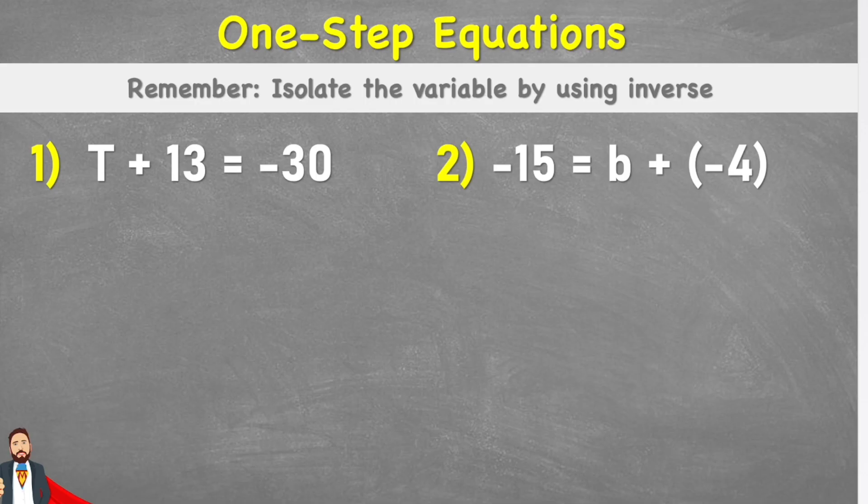Okay, so first let's just look at our equation here and try and identify any features that we see. So this T represents our variable, our unknown value, and at the moment it's connected to this plus 13. Then we have our equals sign, showing that everything on either side of the equals sign is therefore balanced. And on this other side I have a negative 30.